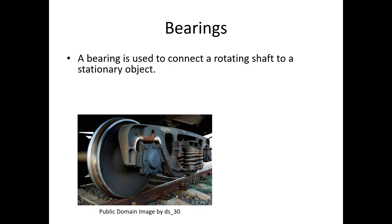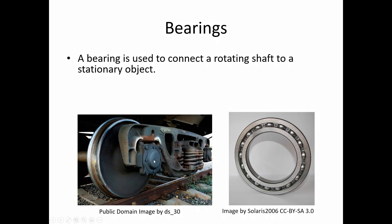Here we've got an example of a bearing on a train car. The wheel and the axle itself are going to be rotating as this moves along the track, but the rest of the train car is not. So we need some way to connect the rotating object to the non-rotating object, and that's the bearing right here. Here's an isolated bearing, just the bearing itself.